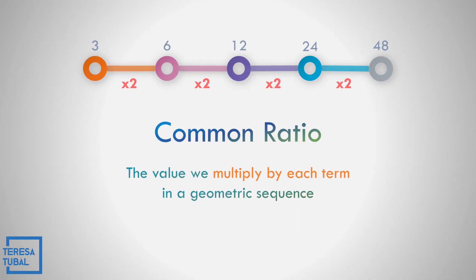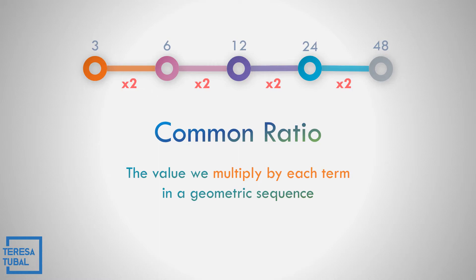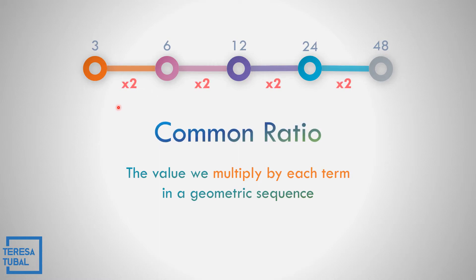The common ratio is the value we multiply by each term in a geometric sequence. As you can see, the common ratio is equal to 2, because that is the number multiplied from the first up to the last term of the geometric sequence.